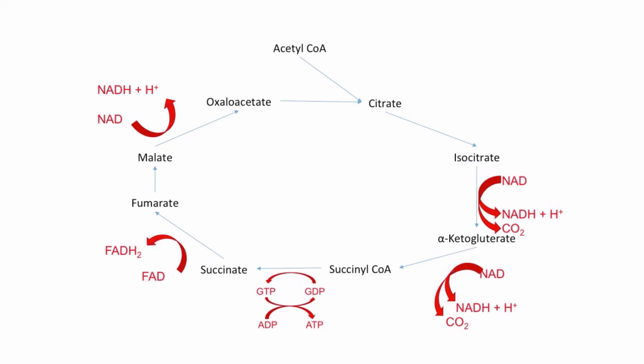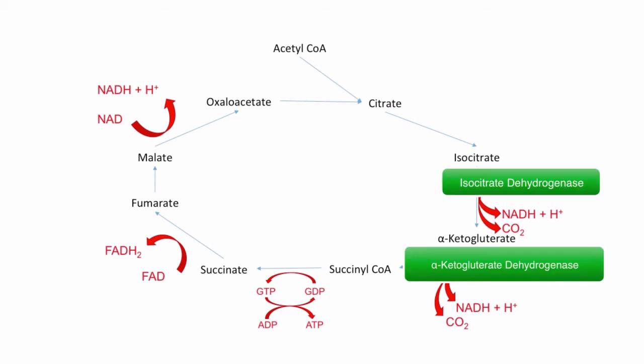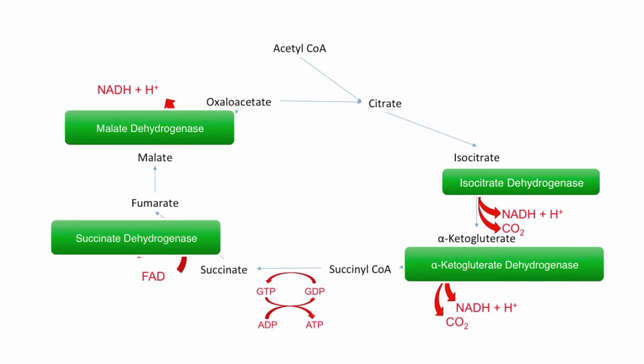We will mention all of those enzymes first, skipping all of the others for now. These four enzymes are isocitrate dehydrogenase, alpha-ketoglutarate dehydrogenase, succinate dehydrogenase, and malate dehydrogenase.